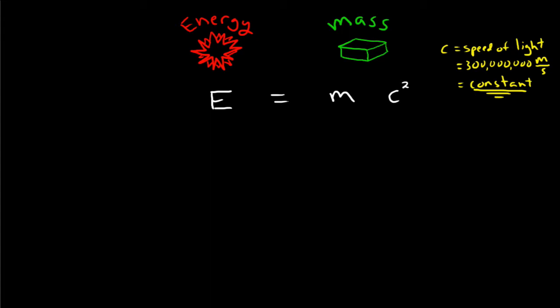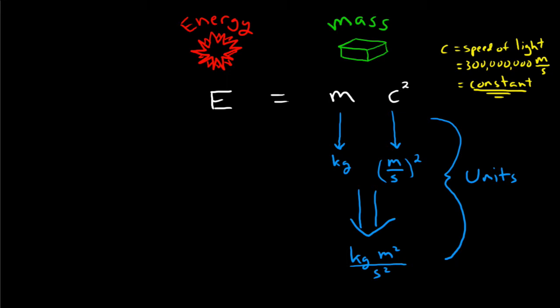I find it helpful to look at the units: mass in kilograms, speed of light in meters per second. That means for the right side of the equation, you get kilograms meters squared per second squared. What's the common unit for energy?